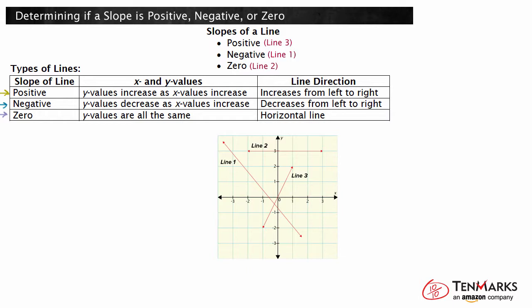We can use the information in the chart to help us determine the slope of lines. We can also add a column that tells us the value of the line compared to zero. Positive slopes are greater than zero, negative slopes are less than zero, and zero slopes are equal to zero.